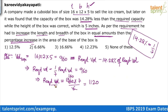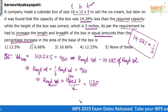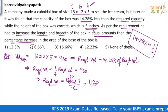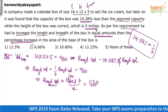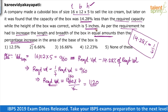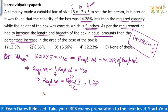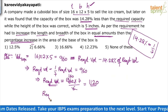Now, as per the requirement, he had to increase the length and breadth of the box in equal amounts. The height was correct at 5 inches. So what should be the required base area?